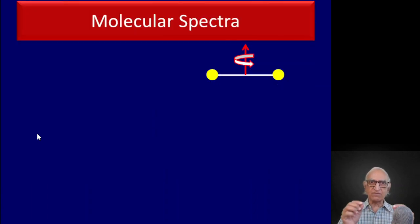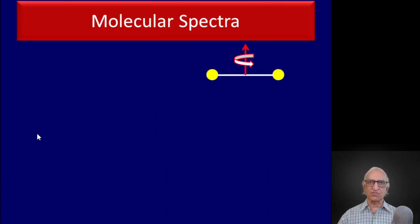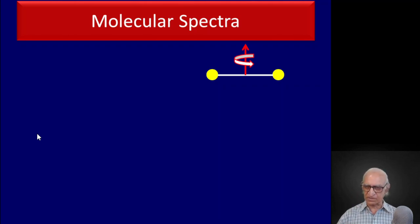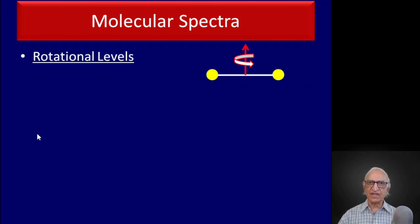Apart from the translational degree of freedom — the molecule can move around — it can rotate about its axis as shown in the figure. This leads to a rotational energy and the distribution of rotational energies in quantum mechanics. Let us discuss this now.